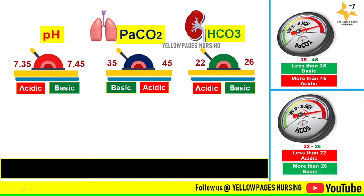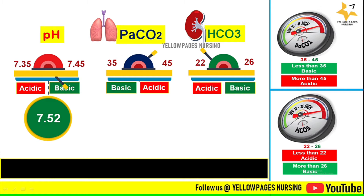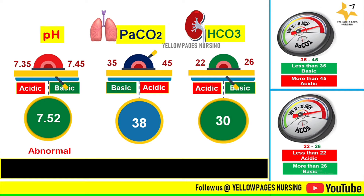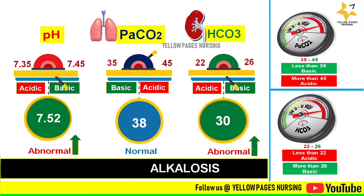Next example: pH is 7.52, PaCO2 is 38, and bicarbonate is 30. pH above the normal range indicates alkalosis. PaCO2 lies within the normal range at 38. Bicarbonate is above the normal level at 30, indicating basic. Considering all parameters, we conclude the ABG is metabolic alkalosis, since there is abnormality with pH and bicarbonate — in simple terms, basic along with basic.